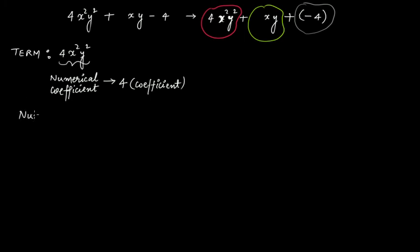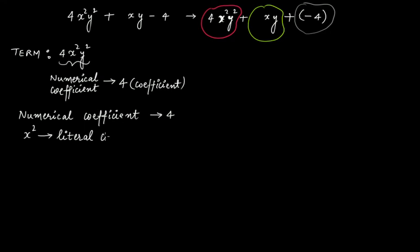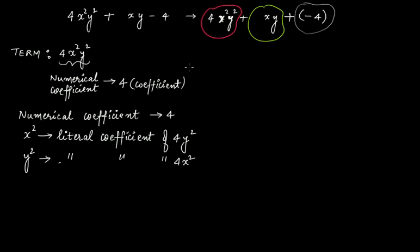When you look within the term 4x²y², the numerical coefficient is 4. Then x² is the literal coefficient of 4y², and similarly y² is the literal coefficient of 4x².